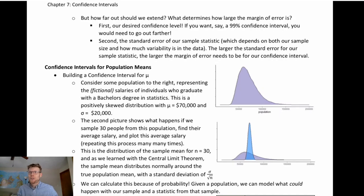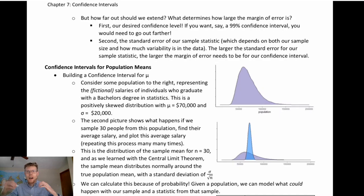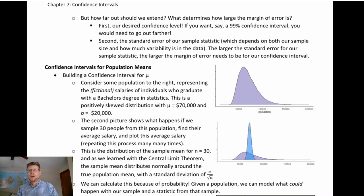This raises the question: how far do we extend? How do we know what the margin of error is supposed to be? That's where sampling distributions come in. First, we have to decide what our confidence level is going to be. If we want to be 95% confident, that's one distance; if we want to be 99% confident, that's a wider distance. If we want to be more confident, we need to stretch out our interval to include more possibilities. Confidence level is one decision that affects how wide our confidence interval is.